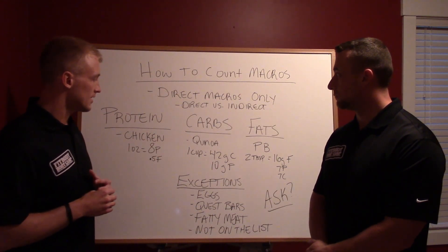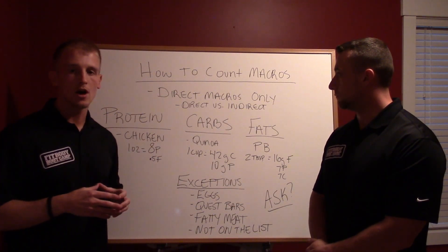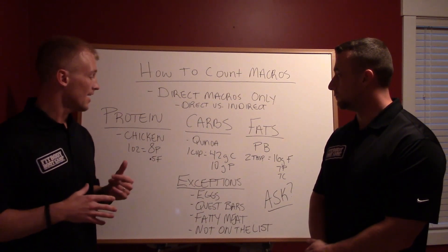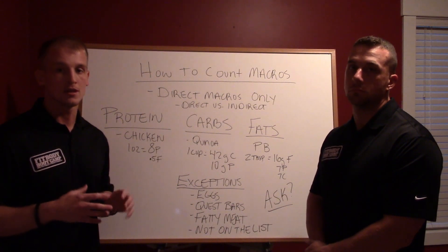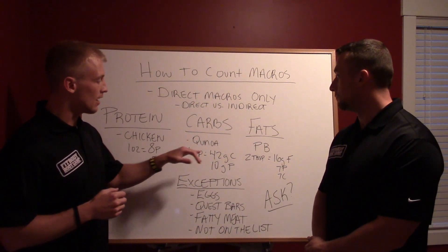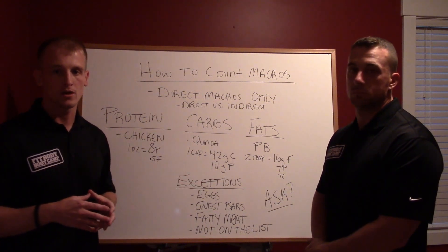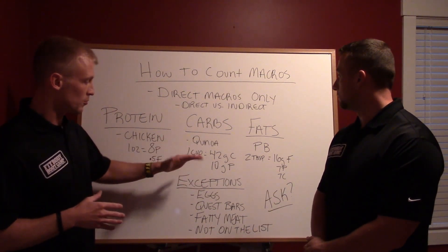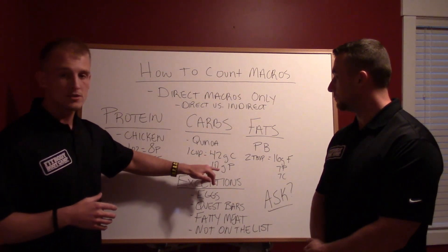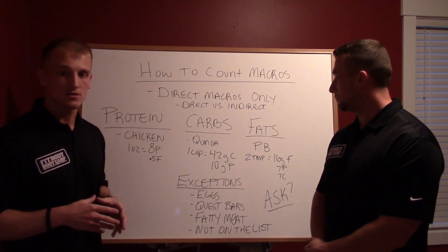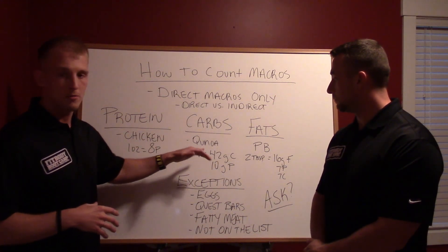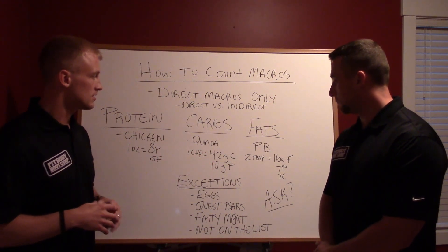Quinoa is another great example — it's a carbohydrate source. One cup of quinoa equals 42 grams of carbohydrates. It also has 10 grams of protein, but since we're only counting direct sources, you only need to count the carbohydrates. The carbohydrates would be a direct source and the protein would be an indirect source. Since quinoa is on the carbohydrate list, you only need to worry about the carbohydrates.